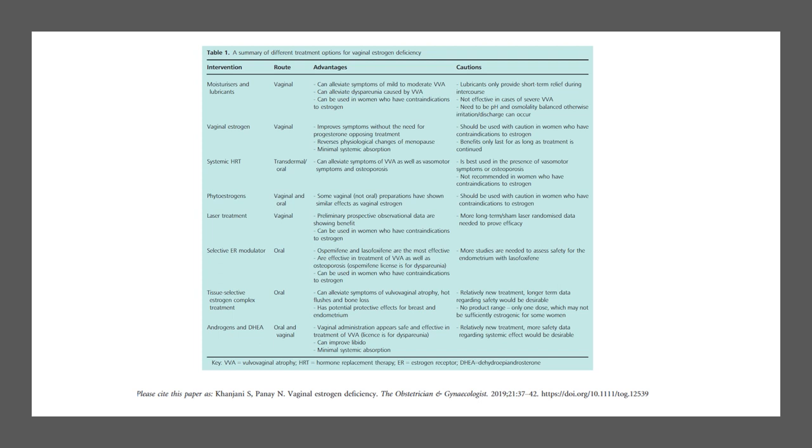Now this is a summary of different treatment options for vaginal oestrogen deficiency. So if you've got moisturizers and lubricants, you have vaginal oestrogen, you have systemic HRT transdermal or oral, you have phytoestrogens vaginal and oral, you've got laser treatment vaginal, you've got selective oestrogen receptor modulators orally, tissue selective oestrogen complex treatment orally, androgens and DHEA which is oral and vaginal as well, which is dehydroepiandrosterone. So this table talks about advantages of these and cautions. So for example, for moisturizers, they can alleviate symptoms of mild to moderate vulvovaginal atrophy, can alleviate dyspareunia caused by vulvovaginal atrophy, can be used in women who have contraindications to oestrogen. Lubricants can only provide short-term relief during intercourse, not effective in cases of severe atrophy, need to be pH and osmolality balanced, otherwise irritation and discharge can occur.